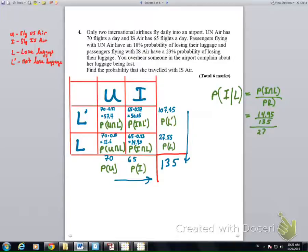I'm going to simply extract the 14.95, where did the 14.95 come from here? The 14.95% of IS Air customers who lost their luggage. Or it's not percent, it's 14.95 out of 135 lost their luggage.